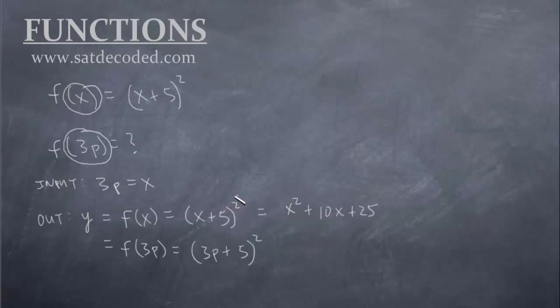Again, remember, don't make that mistake of taking this 2 and distributing it. That is wrong. x plus 5 squared, you gotta foil it out. You gotta do x plus 5 times another x plus 5, which will end up being that whole thing. Down here is the same logic. You gotta do 3p plus 5 times another 3p plus 5. Do not just take this 2 and distribute it to both parts.